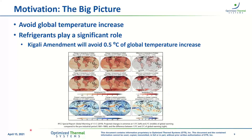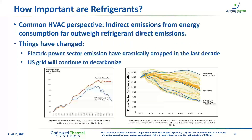That last column represents 0.5°C of global temperature increase avoidance — which is exactly what the Kigali Amendment is attempting to do. It's to avoid half a degree of global temperature increase. I'll pass it over to Dennis for some commentary on how we might want to update our thinking on the role of refrigerants in our industry.